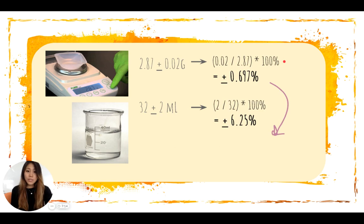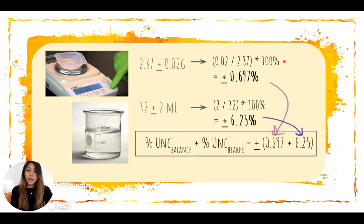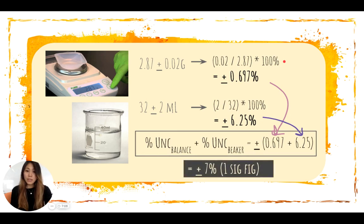So we add 0.697 with 6.25, and we get plus or minus 7%. Recognize that our uncertainty for the mass balance is one significant figure. Our uncertainty for our beaker volume of distilled water is also one significant figure. So our final value needs to be one significant figure as well.